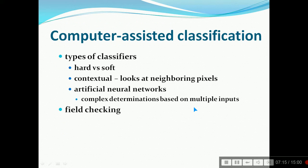The types of classifiers: it may be hard and soft, contextual that means looking at neighborhood pixels, and artificial neural networks, that is complex determination based on multiple inputs, and finally the field checking.